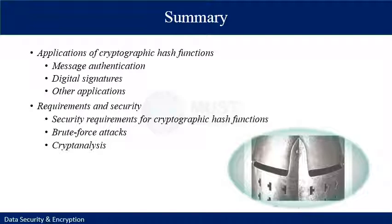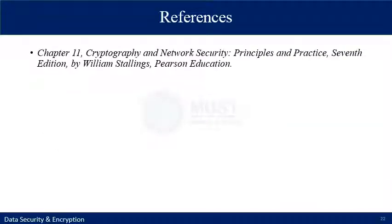This concludes today's lecture. We discussed hash functions and their typical applications — message authentication and digital signatures — as well as their use for storing passwords and intrusion detection. There are requirements and security properties for hash functions, and security can be breached by brute force attacks and cryptanalysis. Important properties include pre-image resistance and collision resistance. If you want to study more, you can read chapter 11 of the recommended book. Thank you.